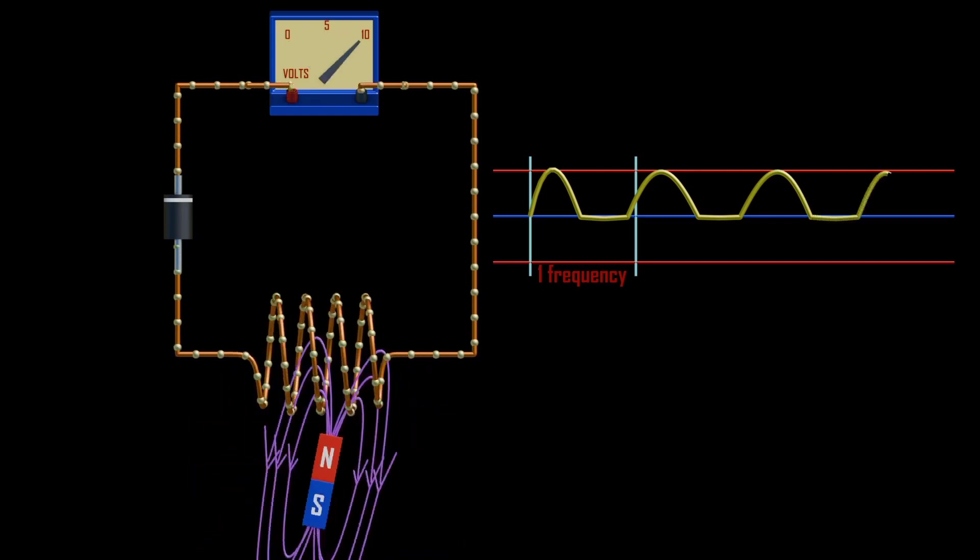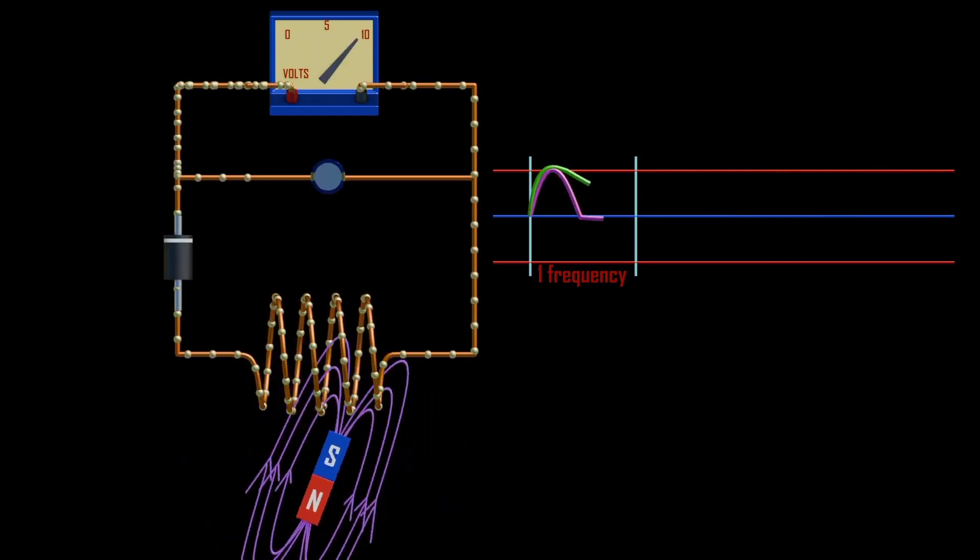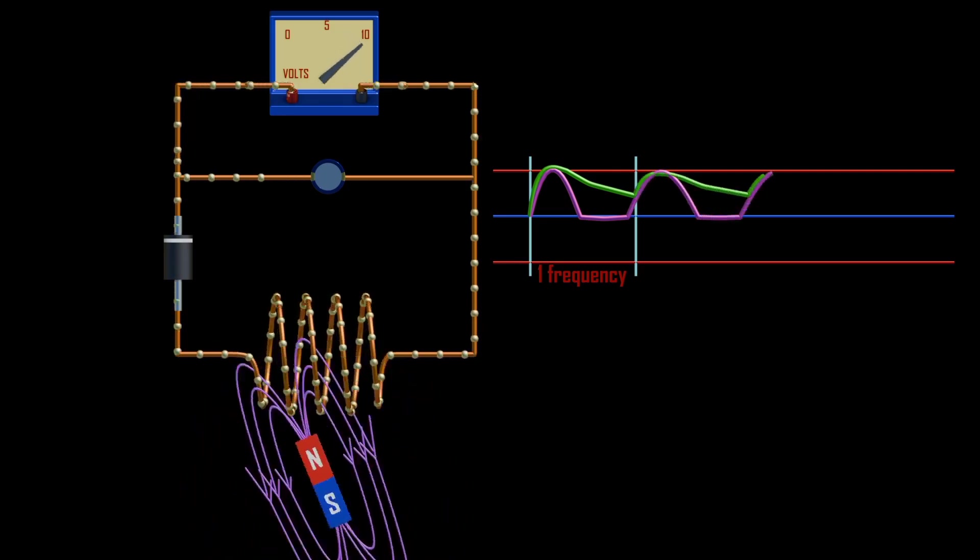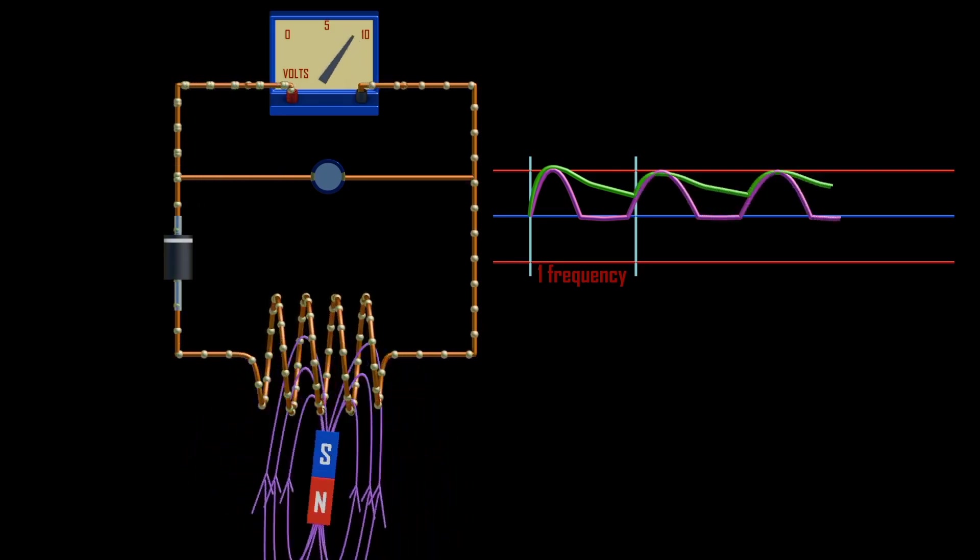The pure DC output can be provided by a single or multi-section filter circuits placed between the output of the rectifier and the load. For example, using capacitor as a filter in circuit, the ripples will be reduced.